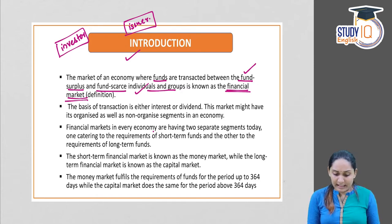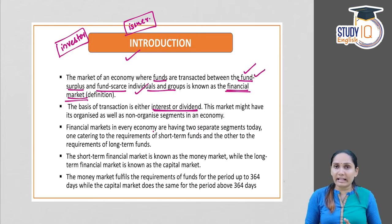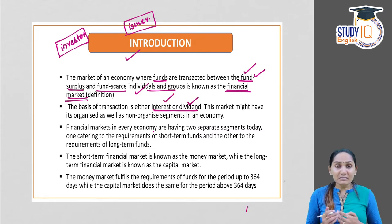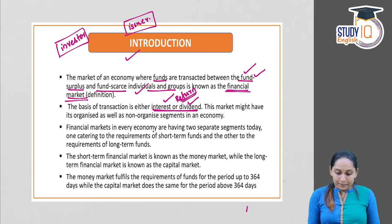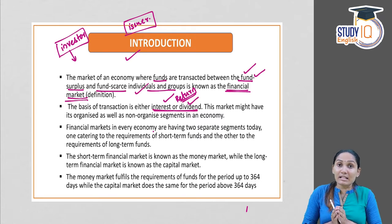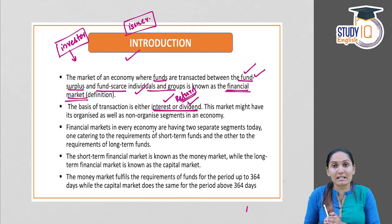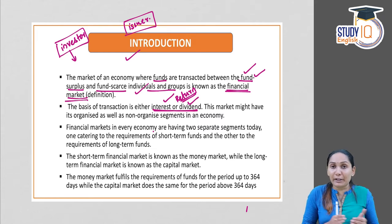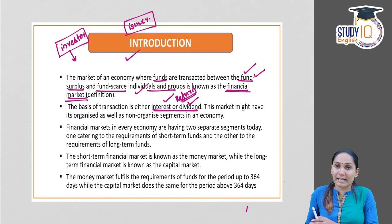The basis of transaction is either interest or dividend. The return that an investor gets is called either the interest or the dividend. It can be an interest-yielding instrument or a dividend-earning instrument. Interest is a periodic payment of returns. Dividend is the part of profit of a company — the share of profit of a company is called the dividend.